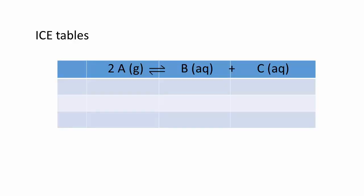The I refers to the initial values. We are given the composition of the system at the start of the reaction. Solids and liquids always have an activity equal to one and do not affect the value of the equilibrium constant — we can ignore them completely. We need only worry about the initial concentrations of any solutes and the initial pressures of any gases. We can place these values in the top row of the ICE table.